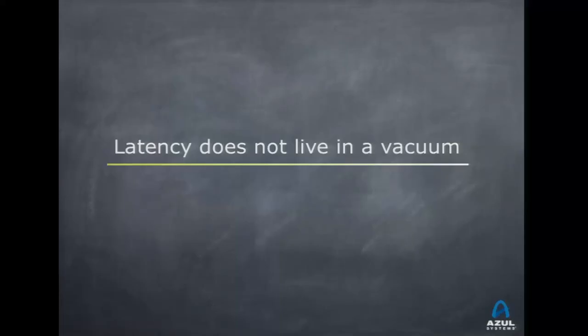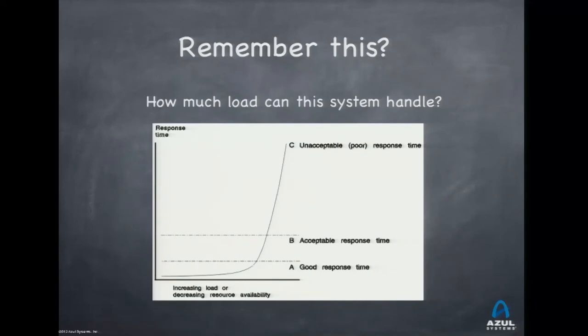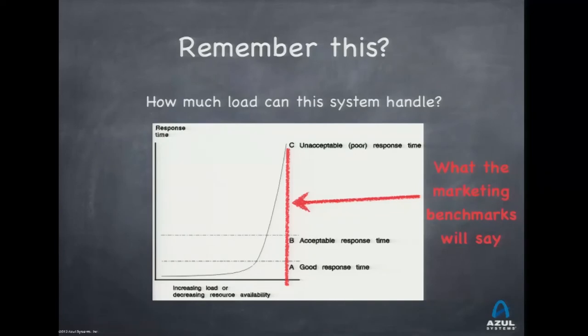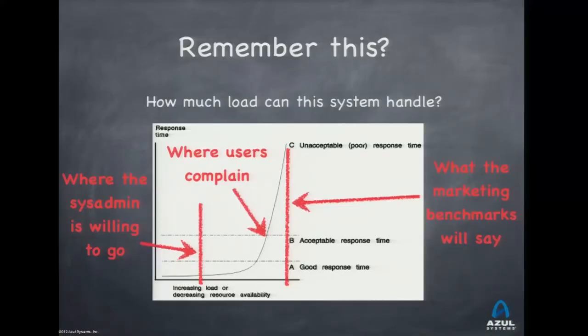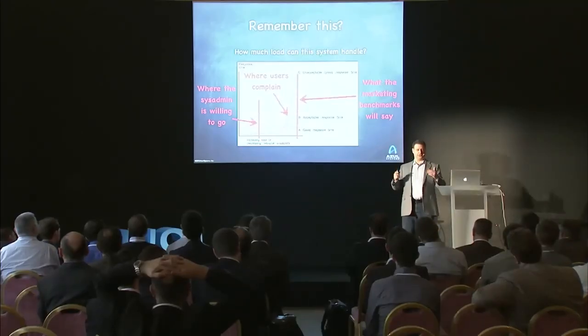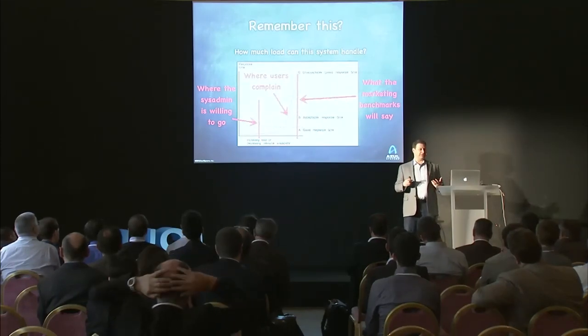Latency depends on other things, and it does depend on load. But load is not the primary control. Under overload the system will collapse. A benchmark tells you the maximum the system can do — but at that point, your users are screaming. Operations is about staying away from the bad range. The good range and the bad range are very different operating points.